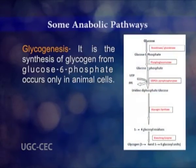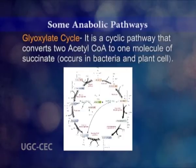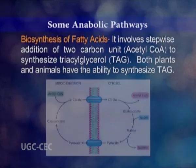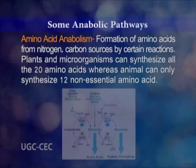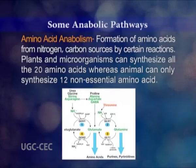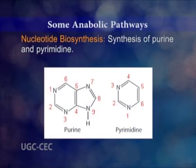Next, glycogenesis — it is the synthesis of glycogen from glucose-6-phosphate, found only in animal cells. Then, glyoxylate cycle — it is the cyclic pathway that converts two acetyl-CoA to one molecule of succinate; it occurs in bacteria and plant cells. Then, biosynthesis of fatty acids — it involves stepwise addition of two-carbon unit acetyl-CoA to synthesize triacylglycerol (TAG); plants and animals have the ability to synthesize TAG. Amino acid anabolism — it is the formation of amino acids from nitrogen and carbon sources. Plants and microorganisms can synthesize all 20 amino acids, whereas animals can only synthesize 12 non-essential amino acids. Next, nucleotide biosynthesis — it includes synthesis of purine and pyrimidine.